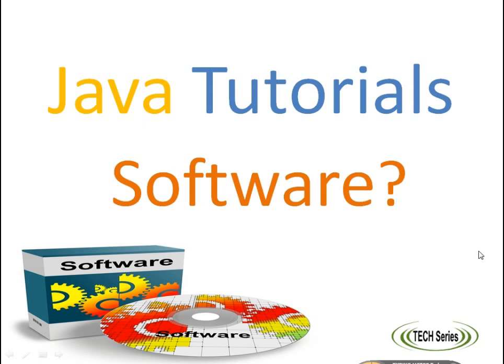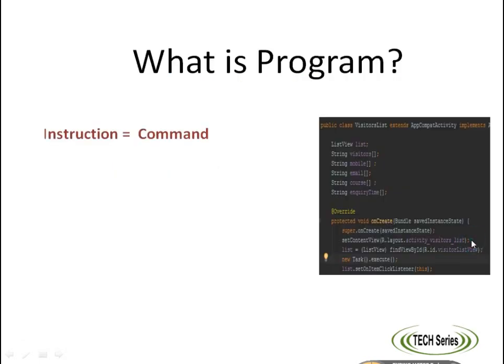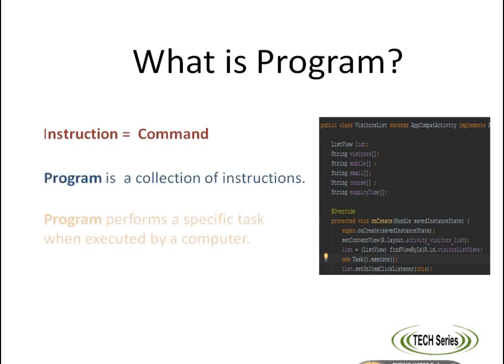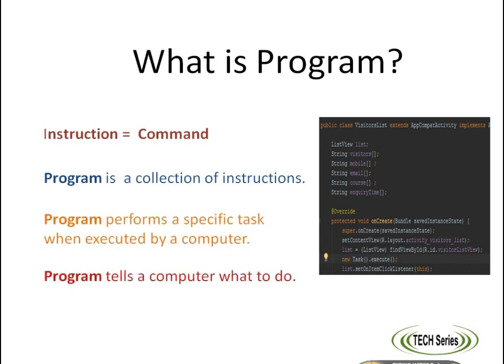The very first topic of the Java series is: what is software? So let's start with the smallest unit of it — the instruction. An instruction is nothing but a command. It tells a computer what to do. A collection of instructions for a computer is called a program.